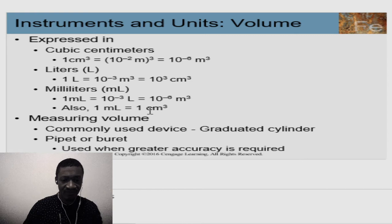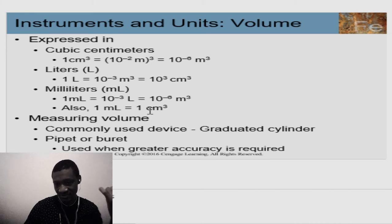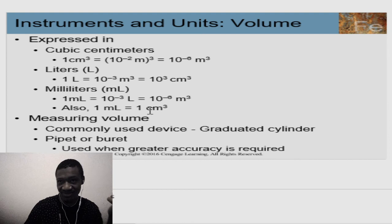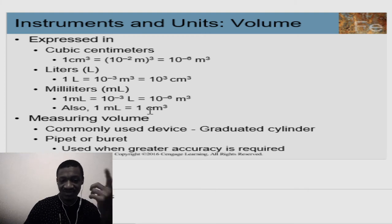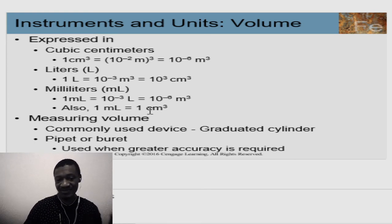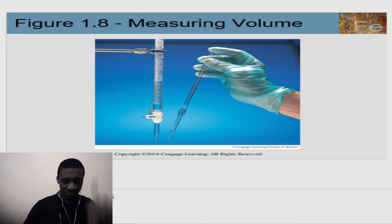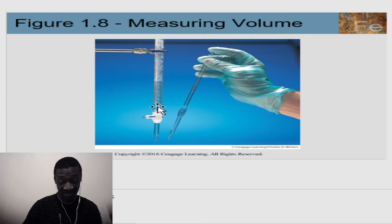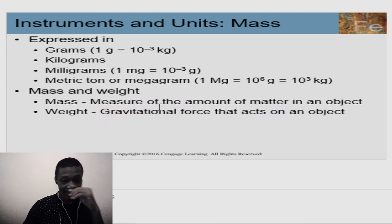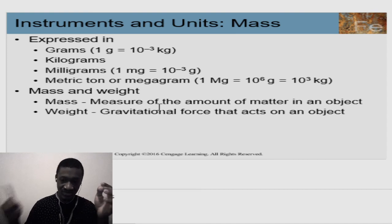Common devices used to make measurements include the graduated cylinder. The 'graduation' simply means the markings on it, not that it graduated from university. The pipette and the burette are also measurement devices used for greater accuracy, meaning the margin of error is smaller. These are titration instruments you'll use in the lab. We'll see this graduated cylinder again ahead.